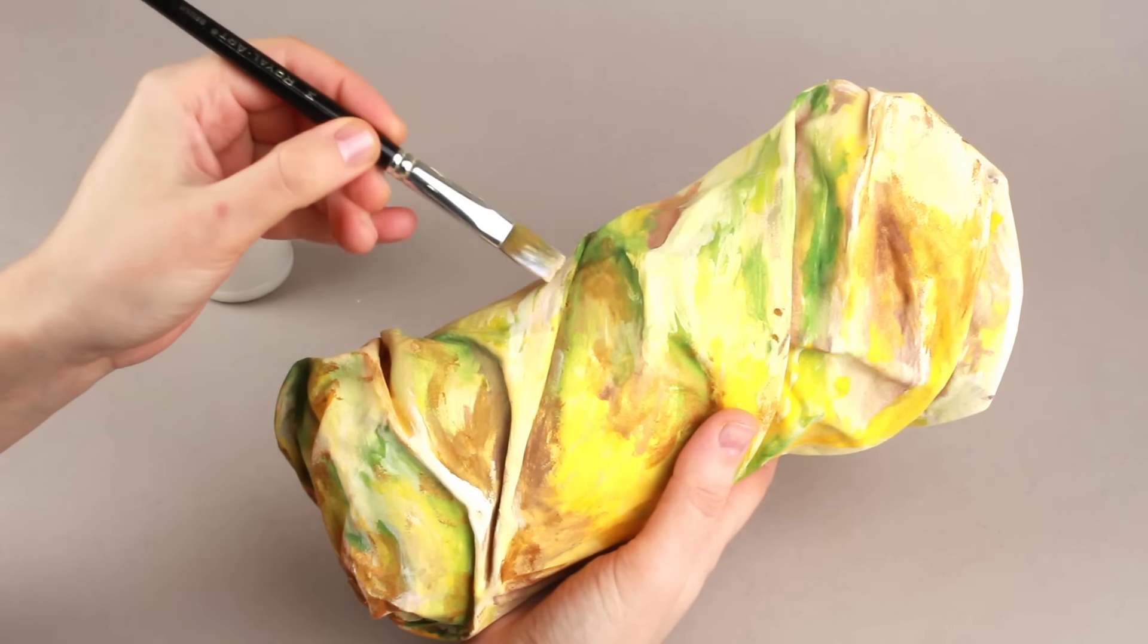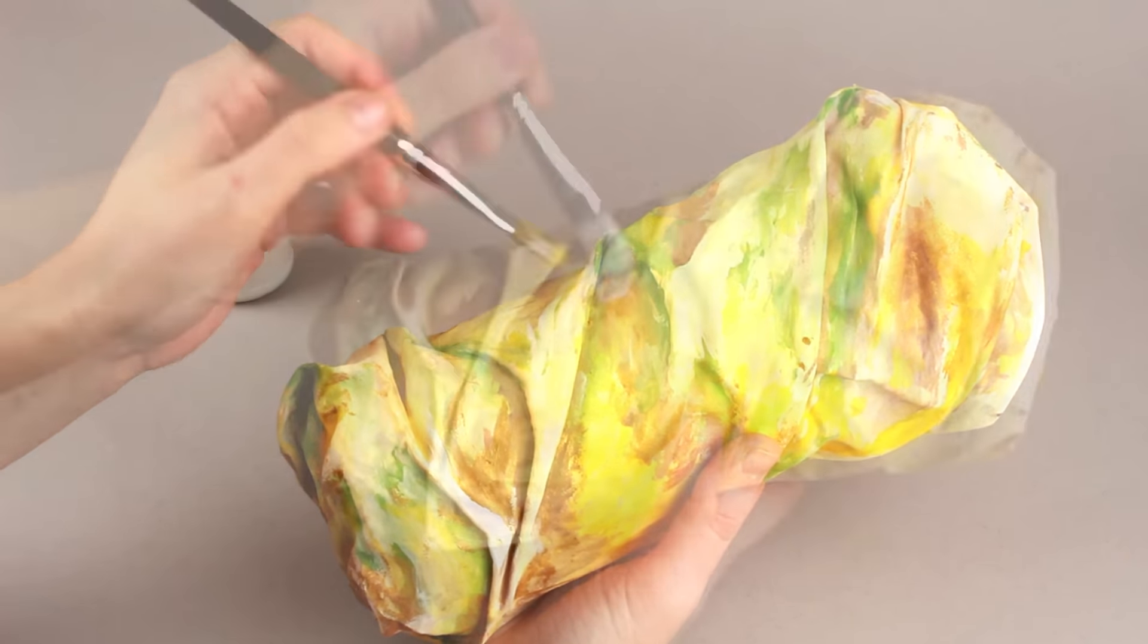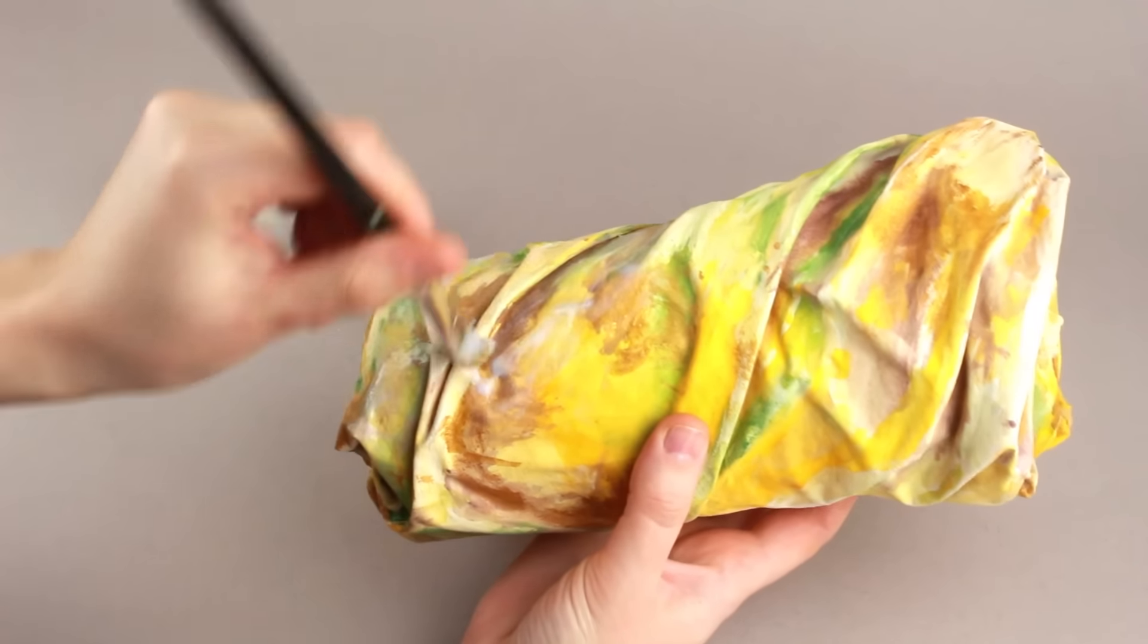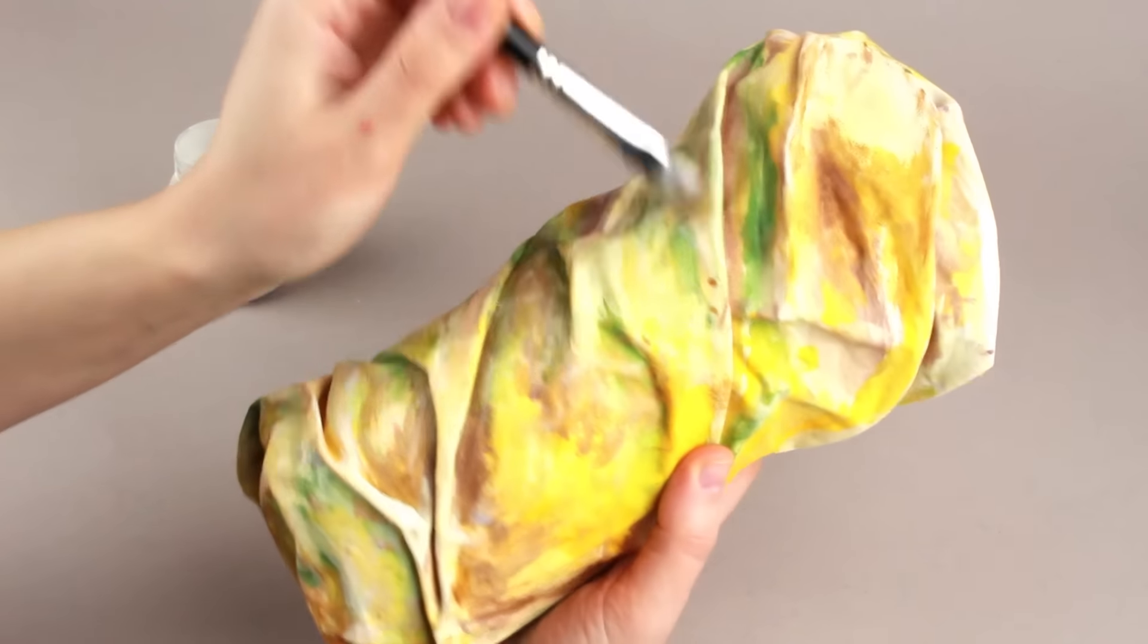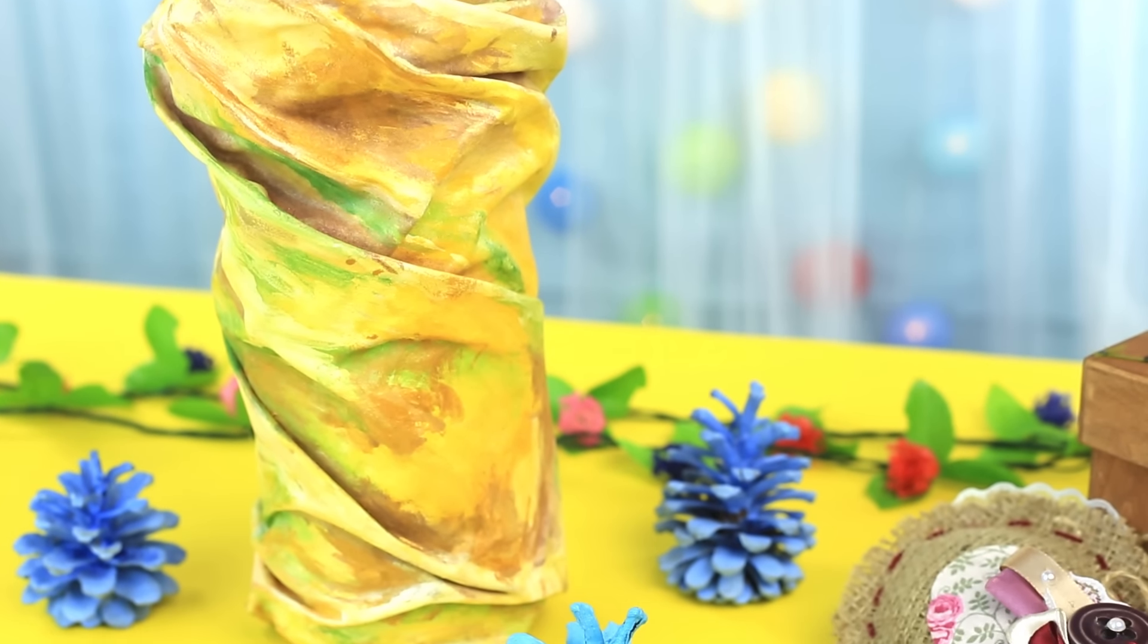Cover the vase with lacquer. It will take a little time to turn a plastic bottle into an unusual fabric vase.